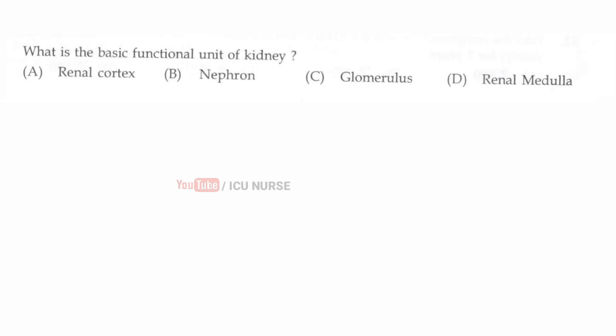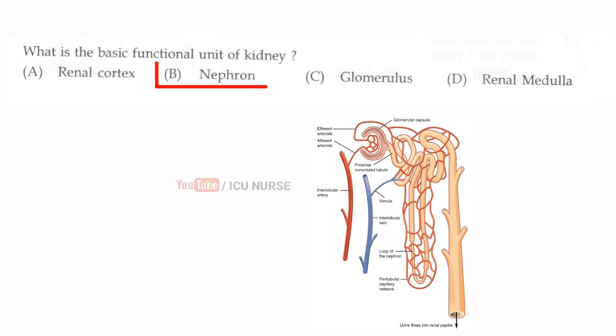What is the basic functional unit of the kidney? The correct answer is B, nephron.